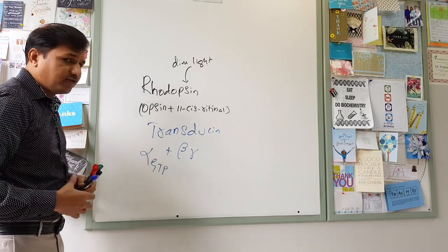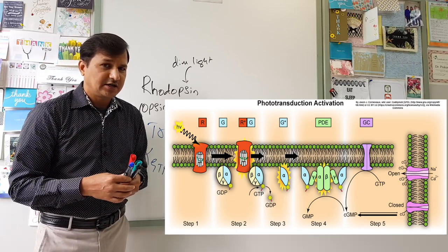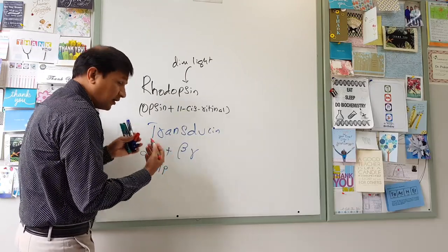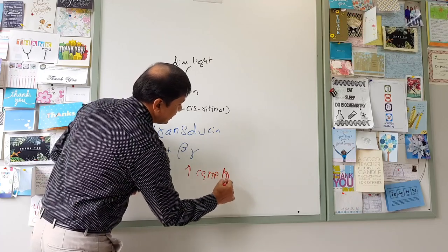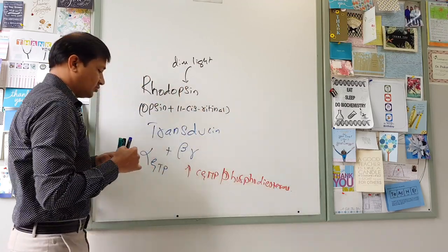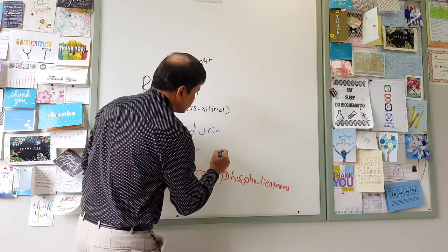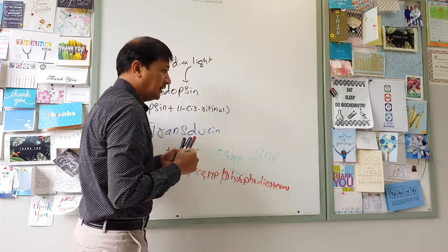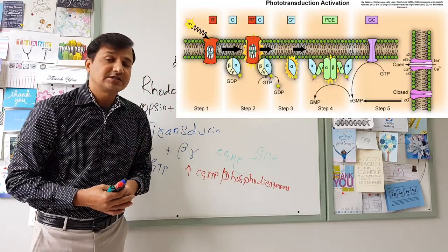The GTP-associated alpha subunit activates a neighboring protein called cyclic GMP phosphodiesterase enzyme. What this cyclic GMP phosphodiesterase enzyme does is convert cyclic GMP into just GMP — cyclic GMP is converted into a GMP molecule. Essentially, the second messenger cyclic GMP concentration goes down whenever cyclic GMP phosphodiesterase is activated.